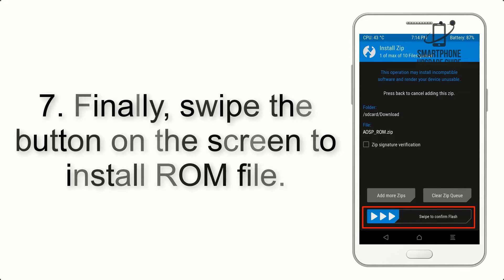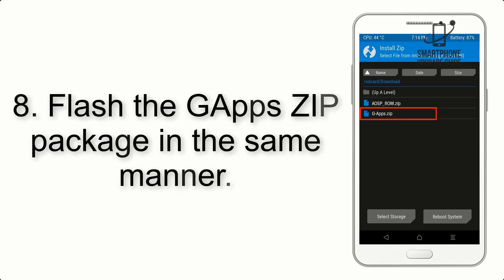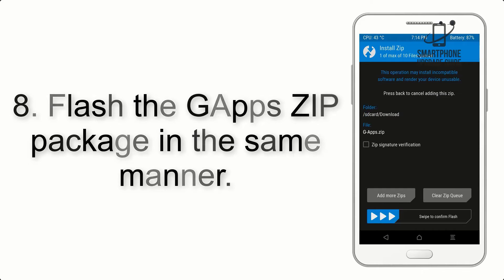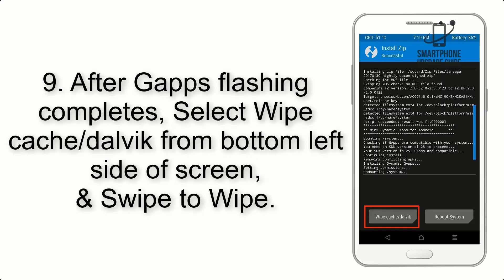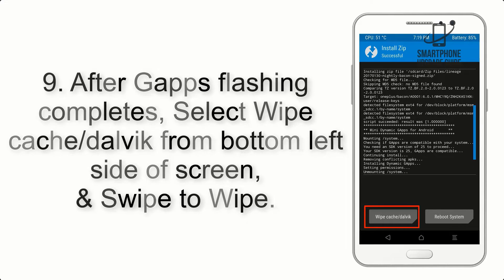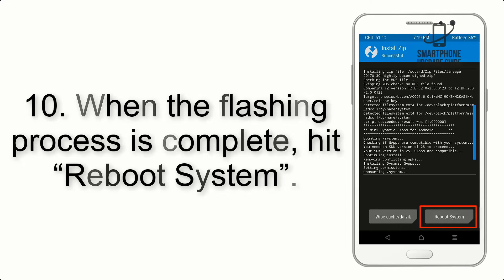Step 7: Swipe the button on the screen to install the ROM file. Step 8: Flash the GApps zip package in the same manner. Step 9: After GApps flashing completes, select Wipe Cache and Dalvik from the bottom left side of the screen and swipe to wipe.